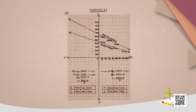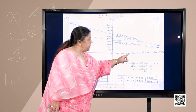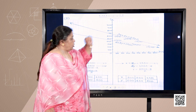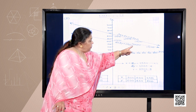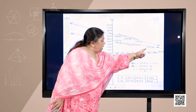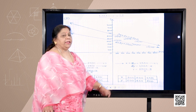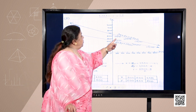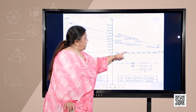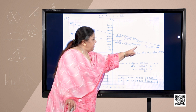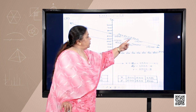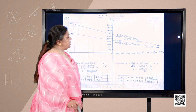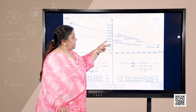The graph uses only the first quadrant since no negative values are needed. The X-axis shows values 100, 200, 300, and so on. Plotting points (100, 400), (400, 300), and (700, 200) gives the line for X + 3Y = 1300. Plotting (100, 600), (300, 500), and (700, 300) gives the line for 3X + 6Y = 3900. This is the graphical representation of this pair of equations.